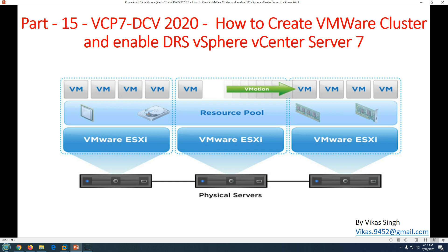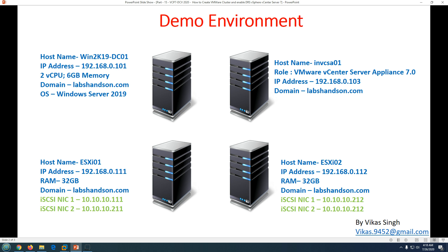You can see here we have three ESXi hosts, and all three have CPU, storage, and memory — all available to provide high availability for the virtual machines. In case anything goes wrong, virtual machines will migrate from one host to another host using vMotion.